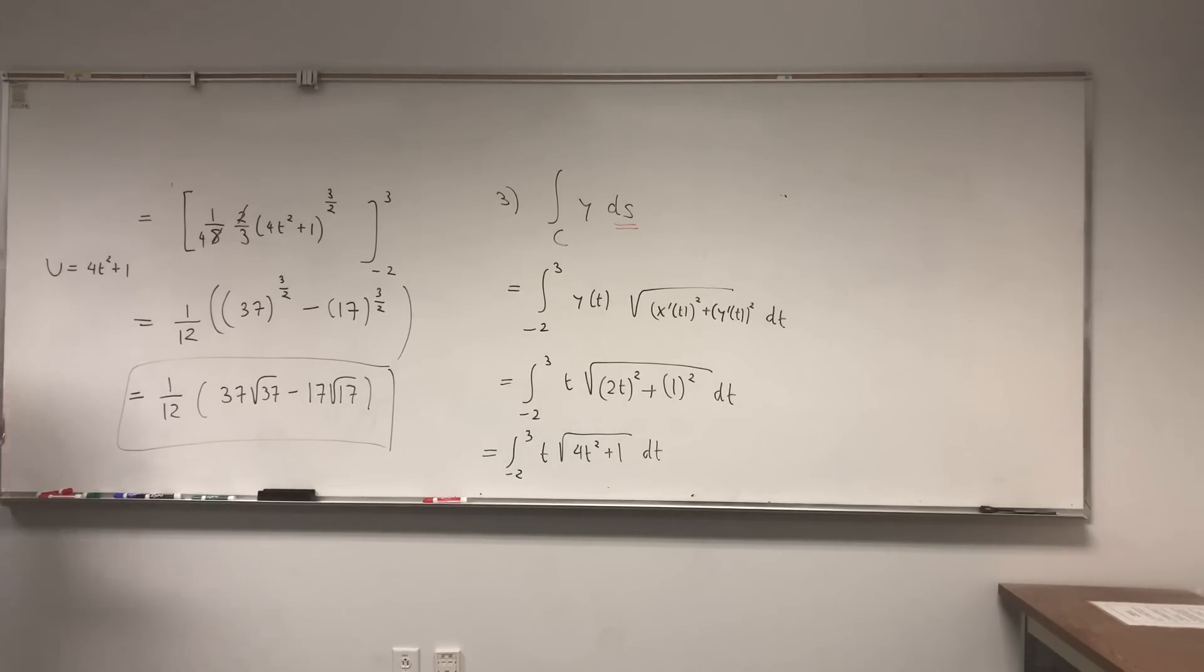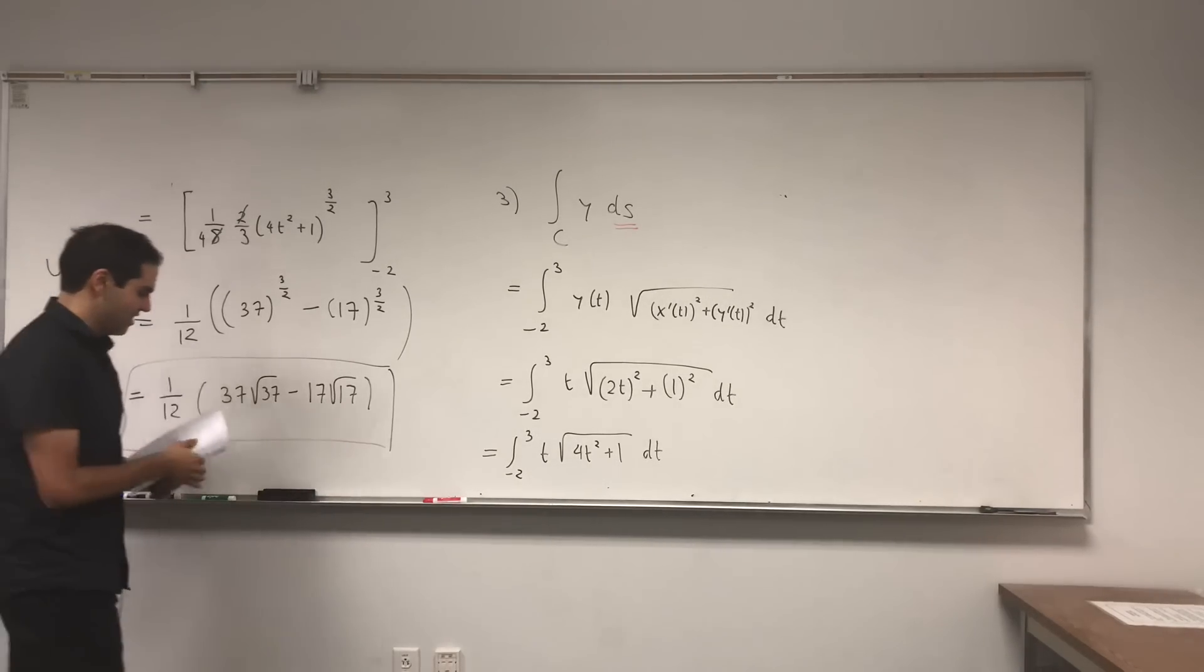In other words, the area under the function y over the curve c is just 1 over 12 times 37 square root of 37 minus 17 square root of 17.